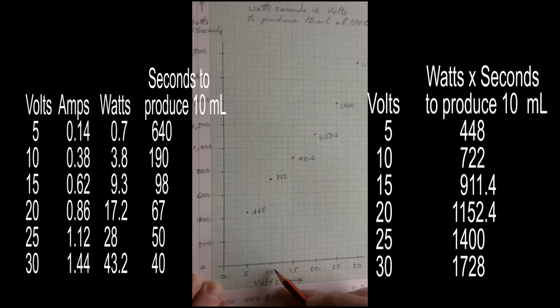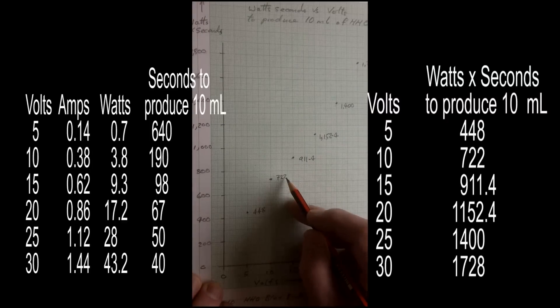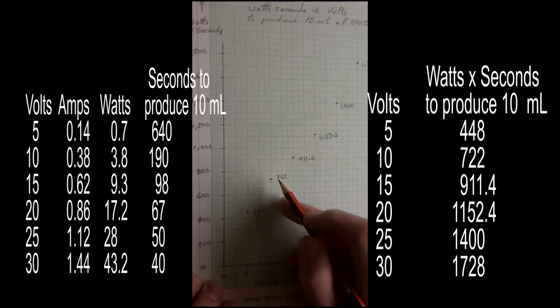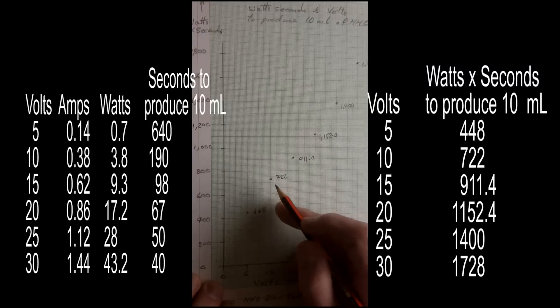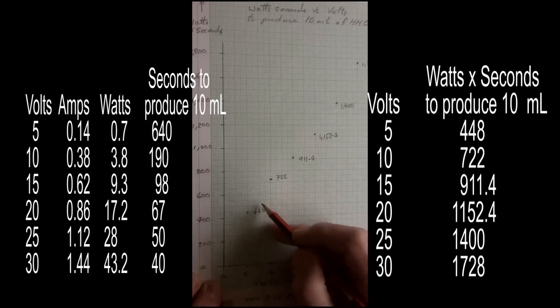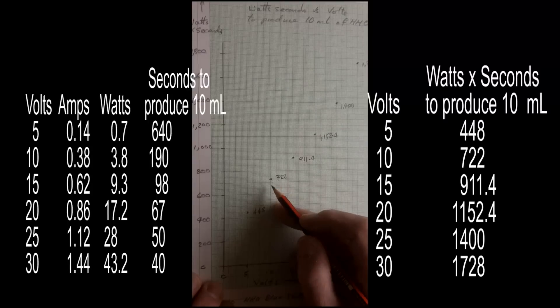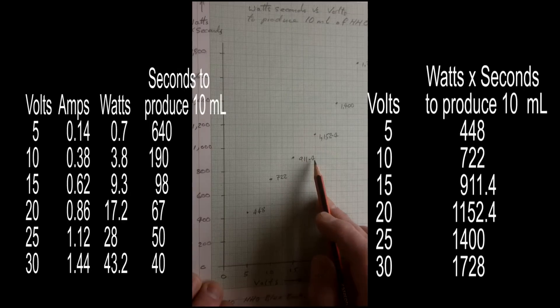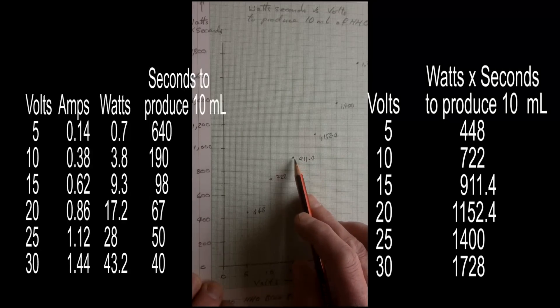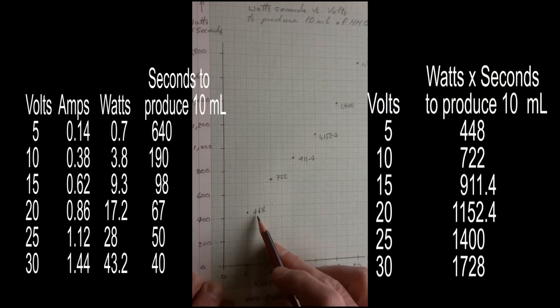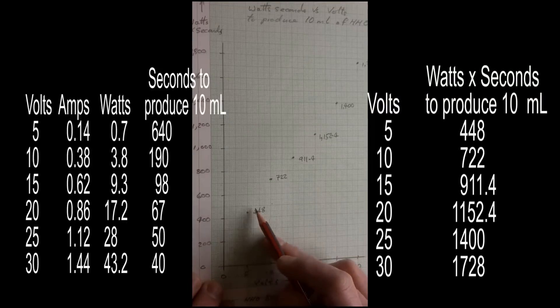When I went to 10 volts, it took 722 watt seconds to produce exactly the same amount of gas. So remember, this is the amount of energy that I'm putting into the water, or into the cell, in order to produce 10 millilitres. So, yes, it happens quicker, but it does so at a cost, quite a significant cost, in efficiency. When I went to 15 volts, it took 911.4 watt seconds, again, to produce the same amount as I could produce with 5 volts, with half the actual input power.